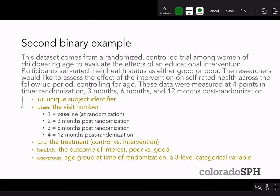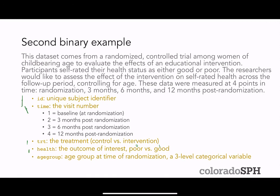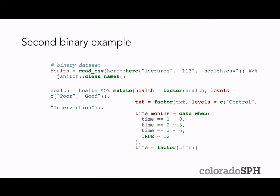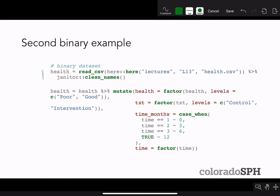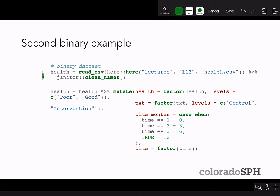Variables include ID for unique subject identifier; time, the visit number coded categorically as one through four; treatment (control vs. intervention); health (poor vs. good); and age group, a three-level categorical variable at randomization. The data is provided on the course website and read in using read CSV.